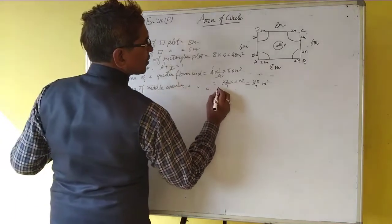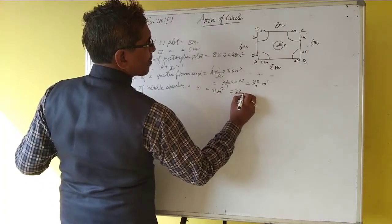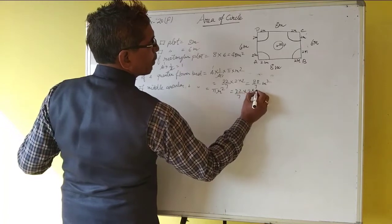Area of middle circular flower bed equals pi r square, equals 22 upon 7 into 2 into 2, which is equal to 88 upon 7 meter square.